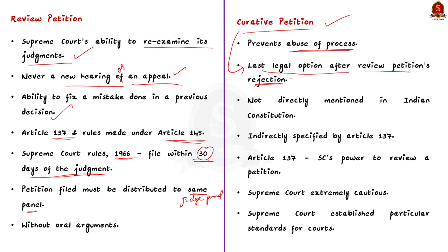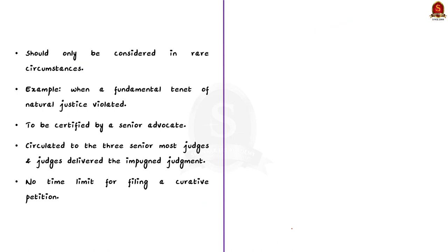The curative petition is not directly mentioned in the Indian Constitution; it is only indirectly specified by Article 137, which talks about the Supreme Court's power to review an order. When a curative petition is filed, the Supreme Court is extremely cautious, and it has established particular standards — they should only be considered in rarest of rare circumstances, for example when a fundamental tenet of natural justice has been violated. A curative petition must be certified by a senior advocate and then circulated to the three senior most judges and the judges who delivered the impugned judgment. Unlike a review petition, which must be filed within 30 days, a curative petition has no time limit.